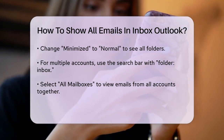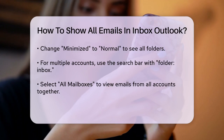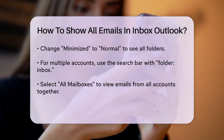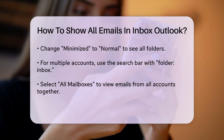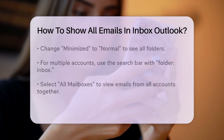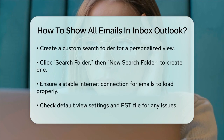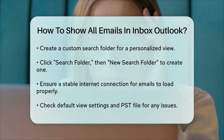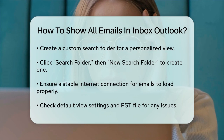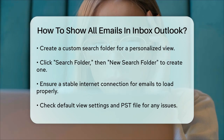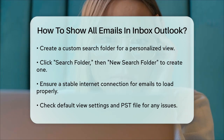For those who prefer a more customized approach, you can create a custom search folder. Click on the Search Folder option on the left side pane, then select New Search Folder. Choose Create a Custom Search Folder and name it something like All Mail. Select all the folders you want to include in this new search and you'll have a folder that holds all your emails from every selected folder.